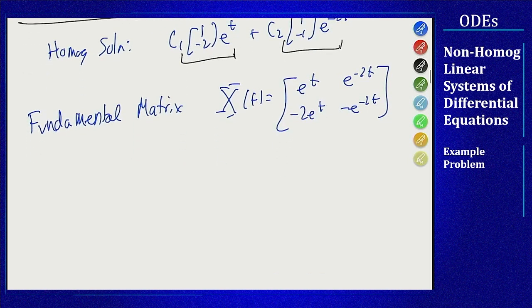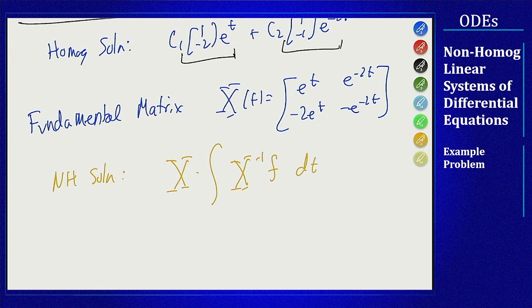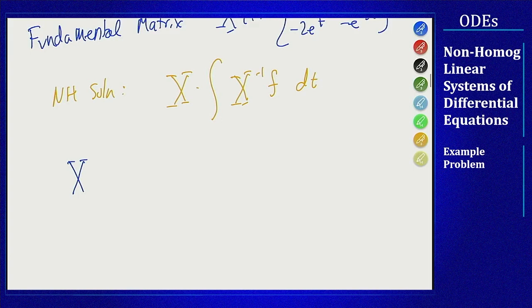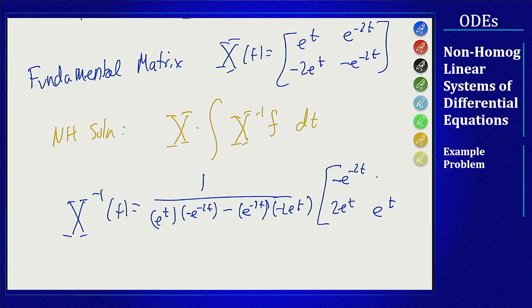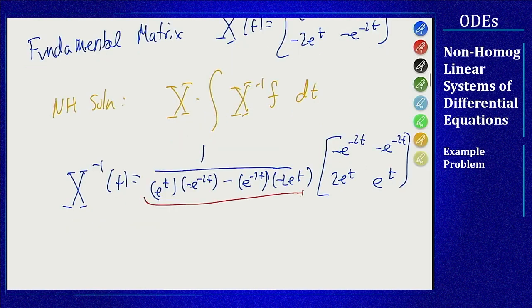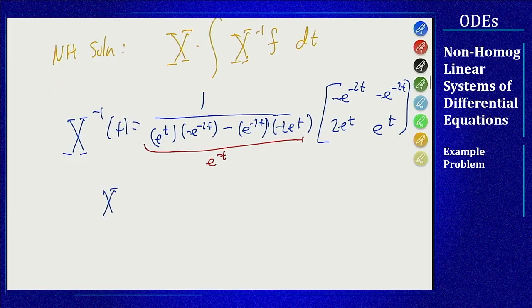The formula for variation of parameters says that my non-homogeneous solution is going to be x times the integral of x inverse times f dt. And so we need to find x inverse. x inverse follows the same formula as the inverse always does. It's 1 over the determinant. You swap the on diagonals and put a minus sign on the off diagonals. This thing right here is negative e to the minus t plus 2 e to the minus t so it's e to the minus t on the bottom or an e to the t on top. So I will get that I can write x inverse as minus e to the minus t, minus e to the minus t, 2 e to the 2t, and e to the 2t.